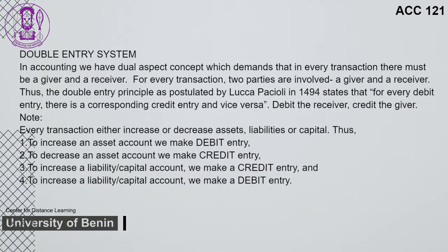In accounting, we have a dual aspect concept that demands that in every transaction there must be a giver and a receiver. For every transaction, two parties are involved — a giver and a receiver. The double entry principle, postulated by Luca Pacioli in 1494, states that for every debit entry there is a corresponding credit entry and vice versa. Every transaction either increases or decreases assets, liabilities, or capital.